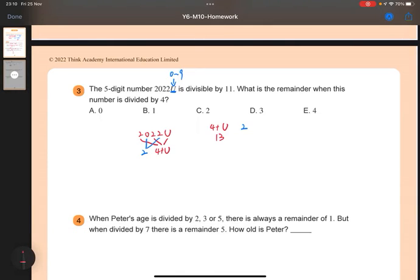13 and 2. The difference is 11, which means when u equals 9, the whole number will be divisible by 11, because this difference is a multiple of 11.